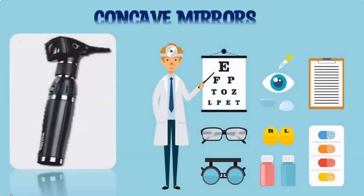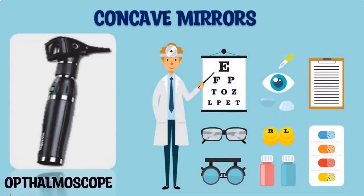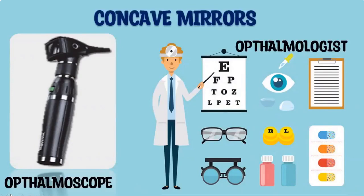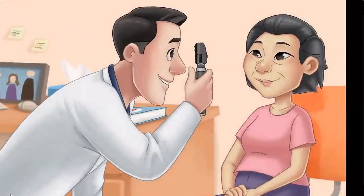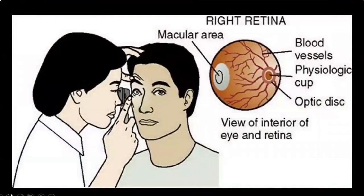Curved mirrors, or concave mirrors, are used in optical instruments such as the ophthalmoscope. This instrument consists of a concave mirror with a hole in the center. The doctor who uses an ophthalmoscope is called an ophthalmologist. The doctor focuses through the small hole from behind the concave mirror while a light beam is directed into the pupil of the patient's eye. This makes the retina visible and makes it easy for doctors to examine.